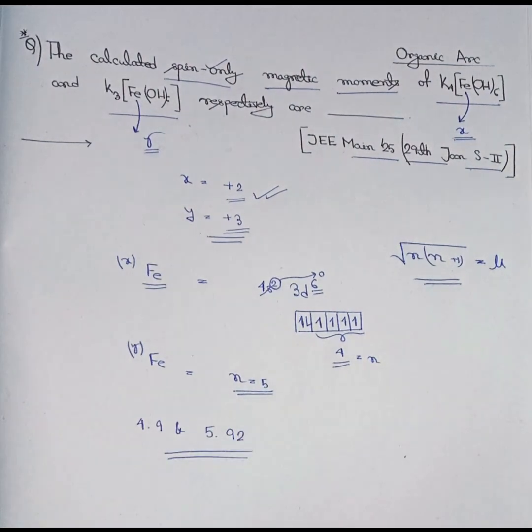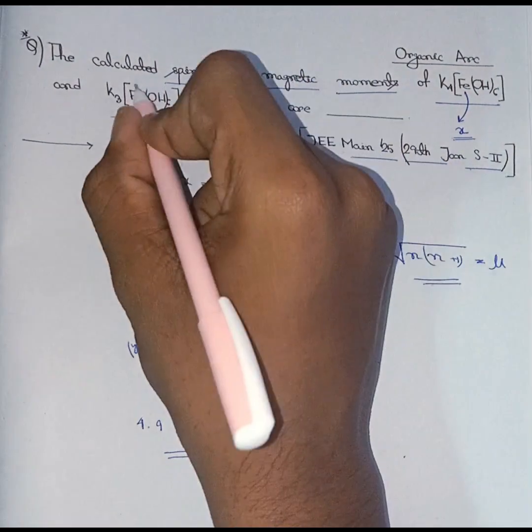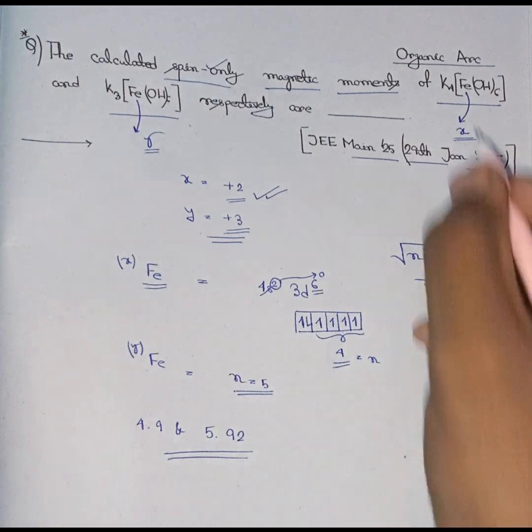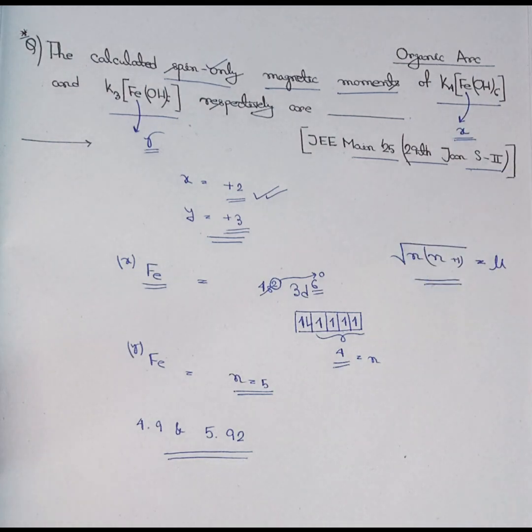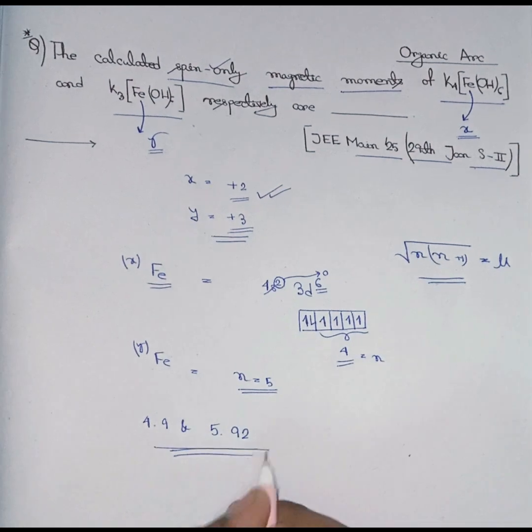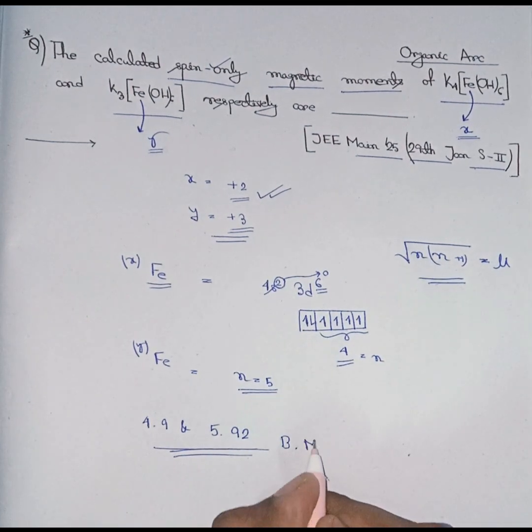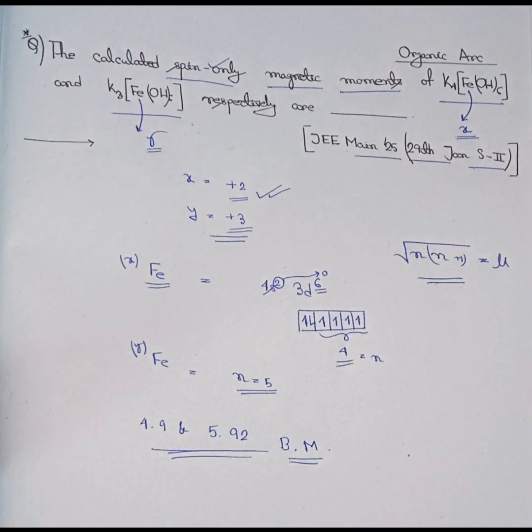So these values are respectively the calculated spin-only magnetic moment for K₄[Fe(OH)₆] and K₃[Fe(OH)₆], both in Bohr magneton, the unit of magnetic moment. So this is how this question is solved.